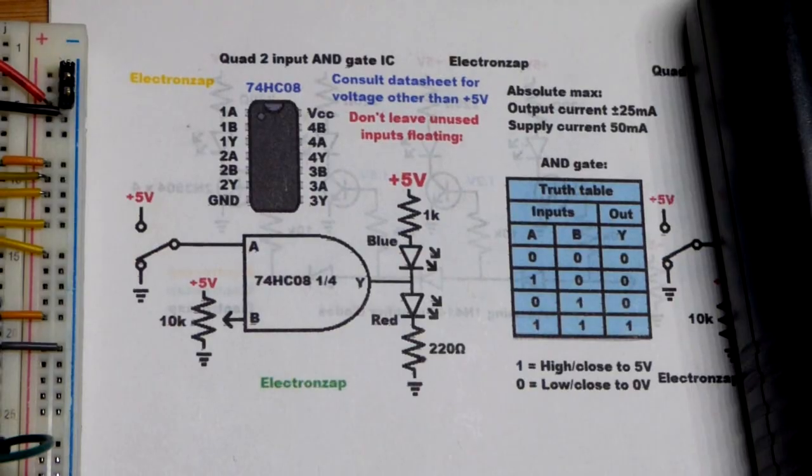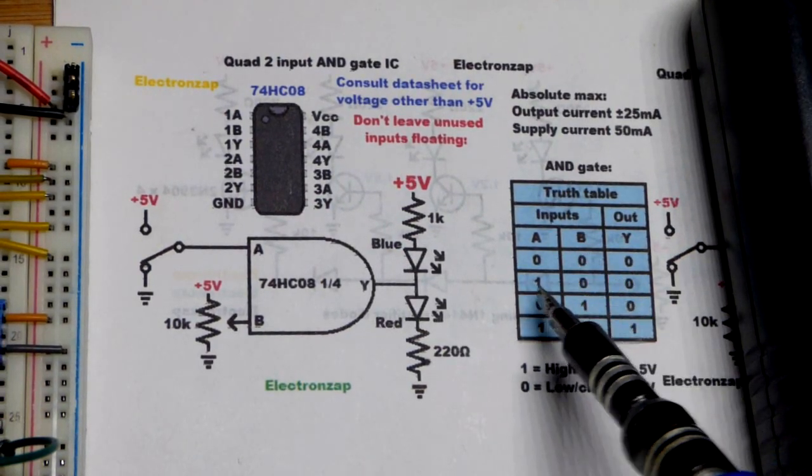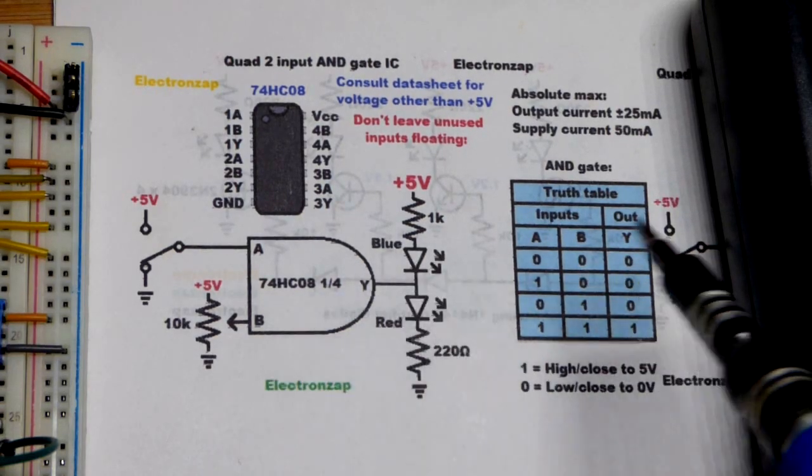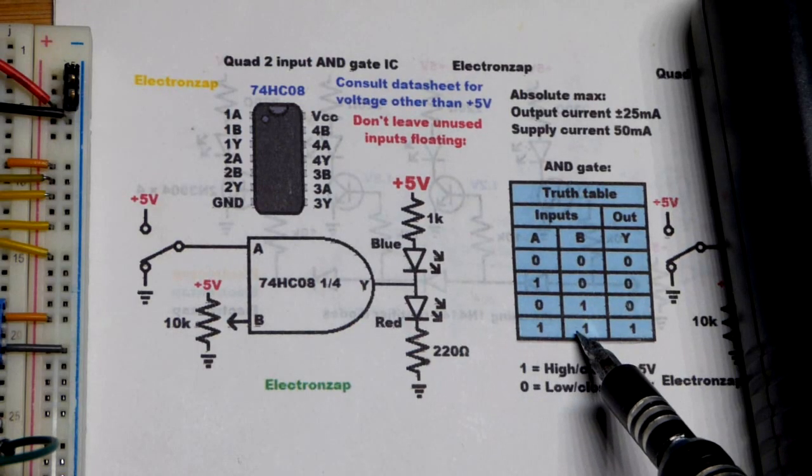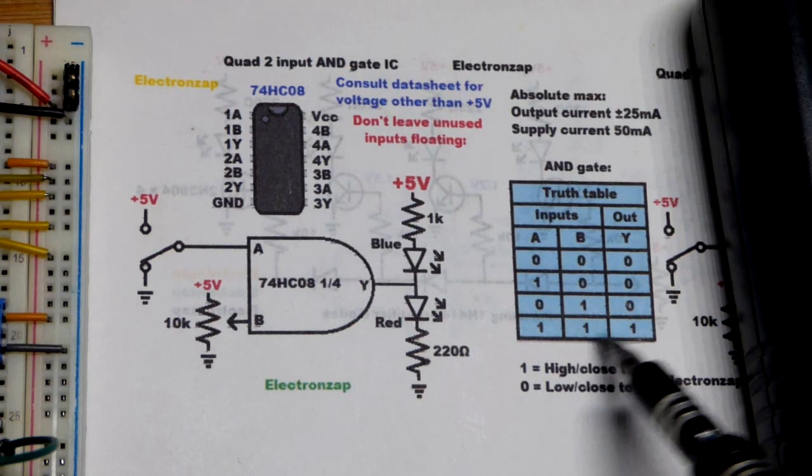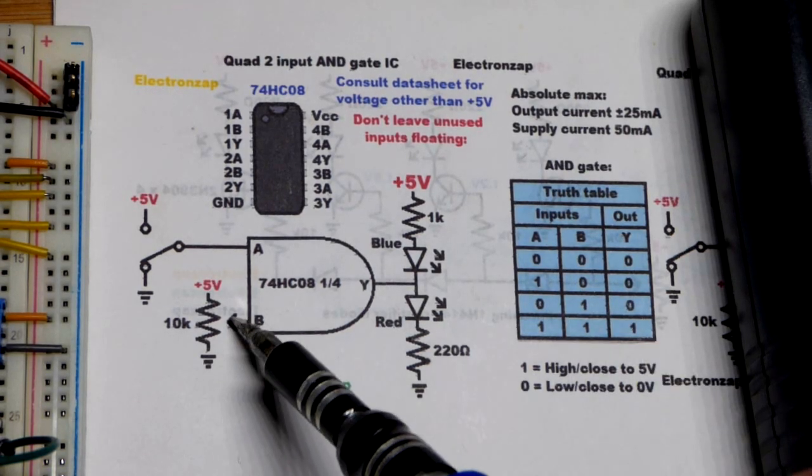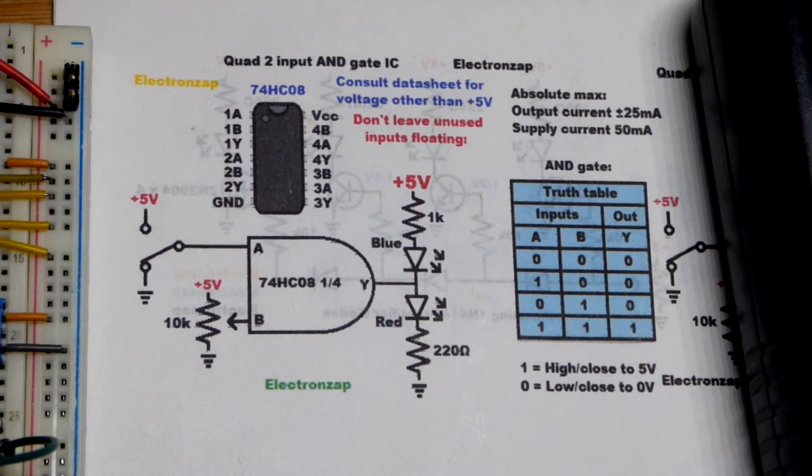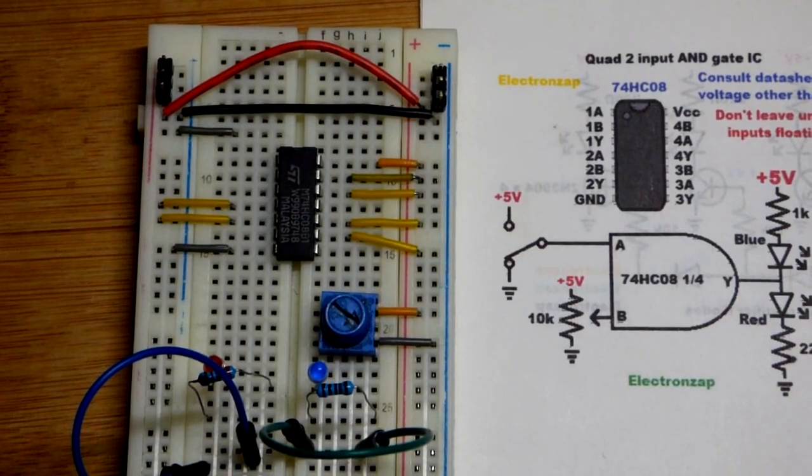But what we should have is if there's any low input, then the output's gonna be low, so close to ground for this particular setup. We need close enough to five volts with both inputs in order to get a high output. And if we get kind of middle ground region, it might get a little iffy. It's better with this particular integrated circuit to give it a solid voltage change.